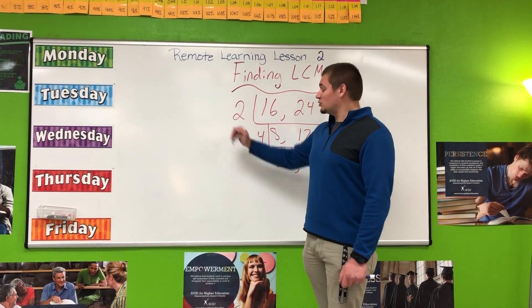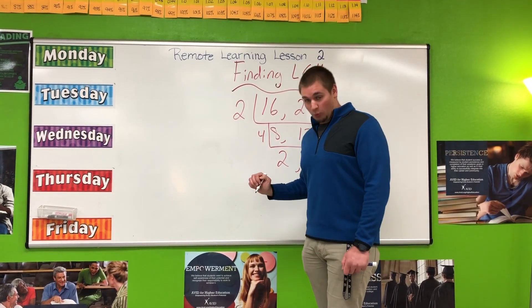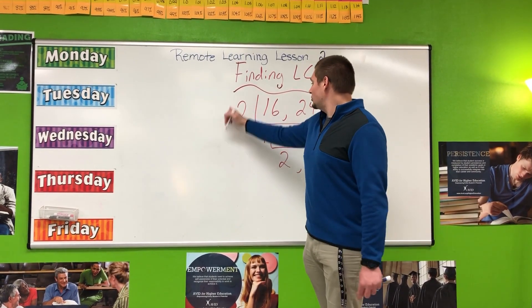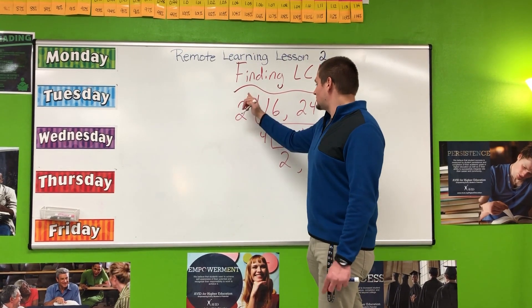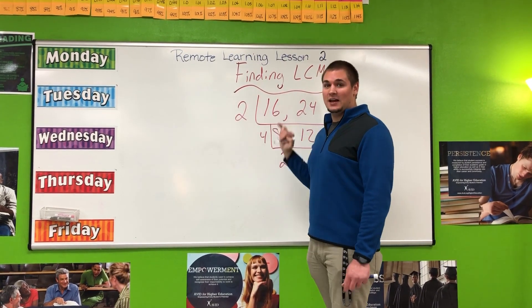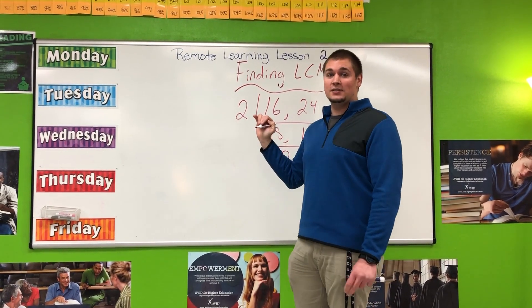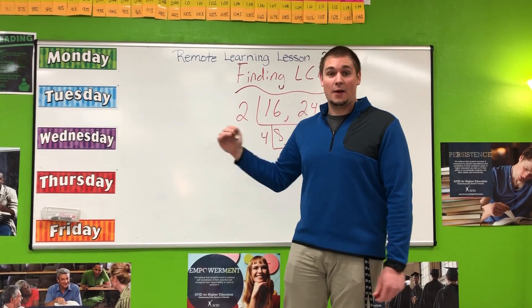Yesterday, with the greatest common factor, we multiplied the two numbers on the left-hand side of the ladder. Today, we are finding the least common multiple.